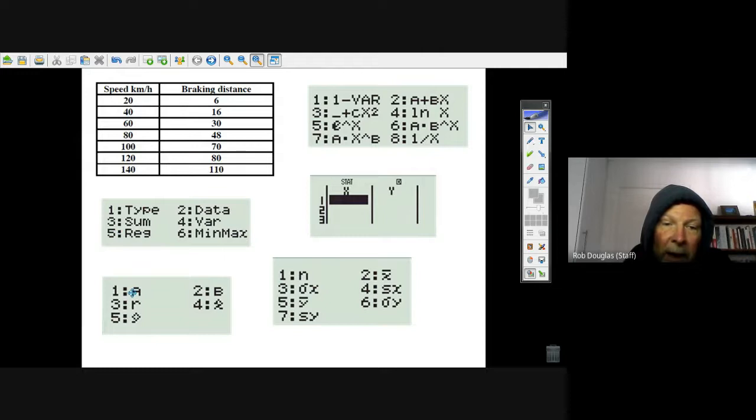If you hit number five and equals, there's your A, your y-intercept. A plus BX - there's your gradient of your line. So you've got the equation of the line just in your calculator there. This is the correlation coefficient - it tells you how strong the correlation is.